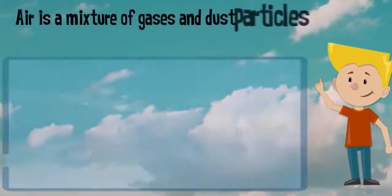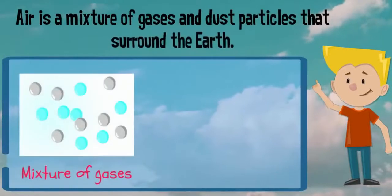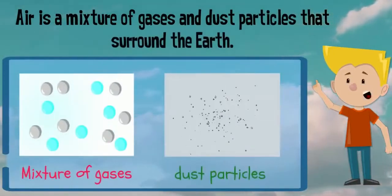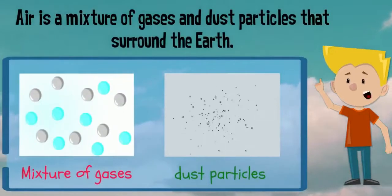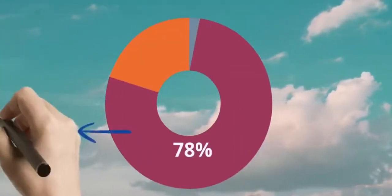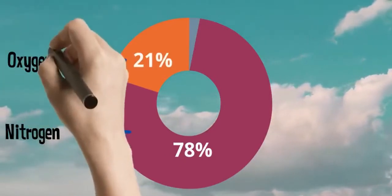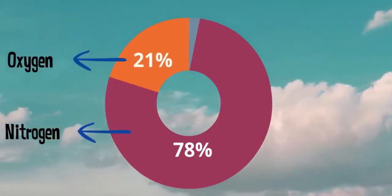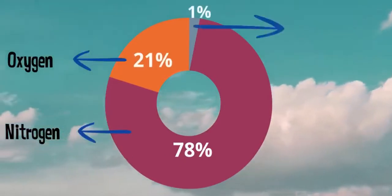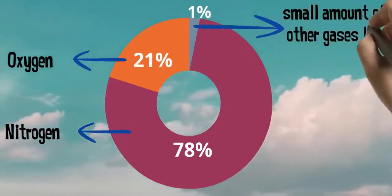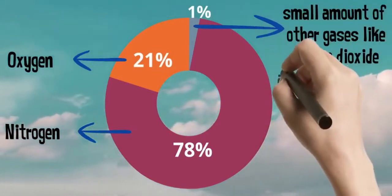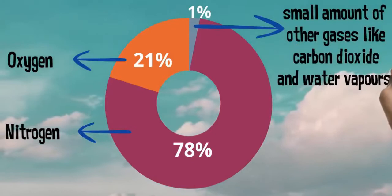Air is a mixture of gases and dust particles that surround the earth. Air contains 78% nitrogen, 21% oxygen, and 1% of other gases like carbon dioxide and water vapors.